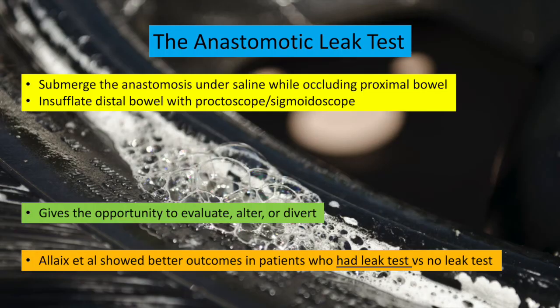Most surgeons use the generic anastomotic leak test after colorectal anastomosis, where the bowel is submerged under saline while the proximal bowel is occluded. Insufflation through the distal bowel with either a proctoscope or sigmoidoscope attempts to elicit bubbling from the anastomosis, essentially signaling a leak. This gives the surgeon the opportunity to evaluate, alter the anastomosis, or divert.